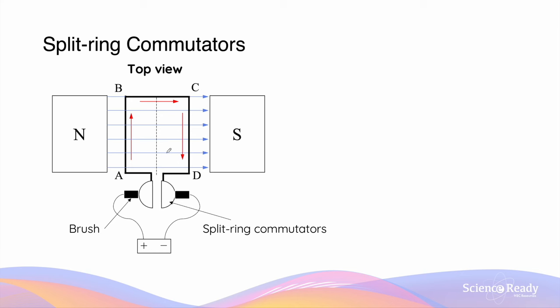These two components are fixed to the armature, so as the armature rotates, the two split ring commutators will also rotate with the armature. Between the split ring commutators and the DC power supply — in this case a battery — we have what we call brushes.